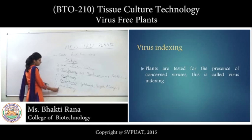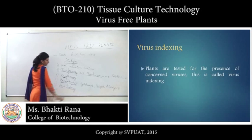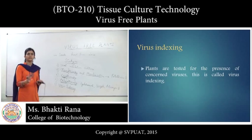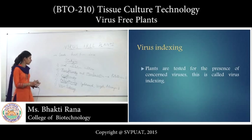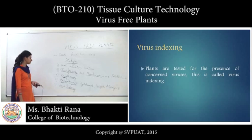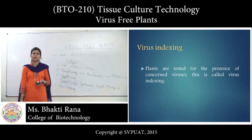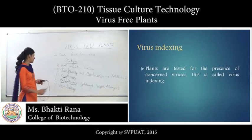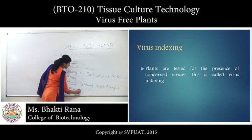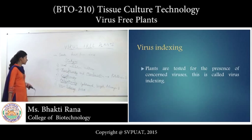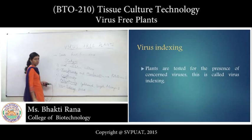Next we have virus indexing. Virus indexing is like making an index — you will take the plants and record whether they are virus-free or virus-present. You are going to index the plants. For virus indexing, you can test the plant to determine if it is virus-free, and you can use techniques like ELISA for virus indexing.